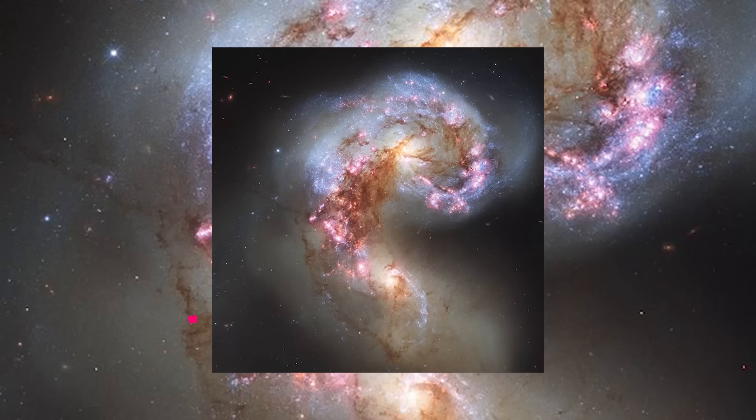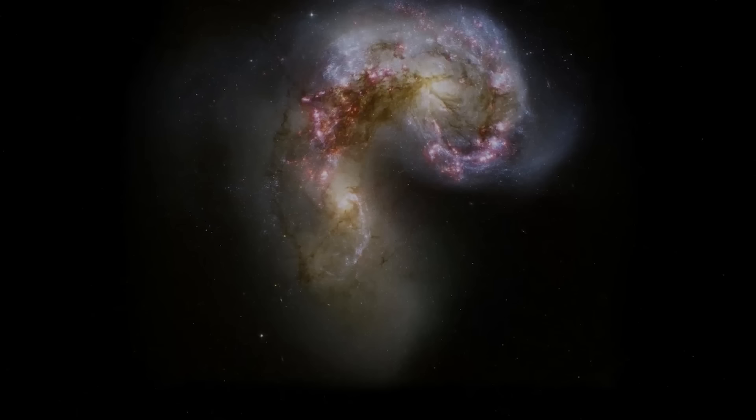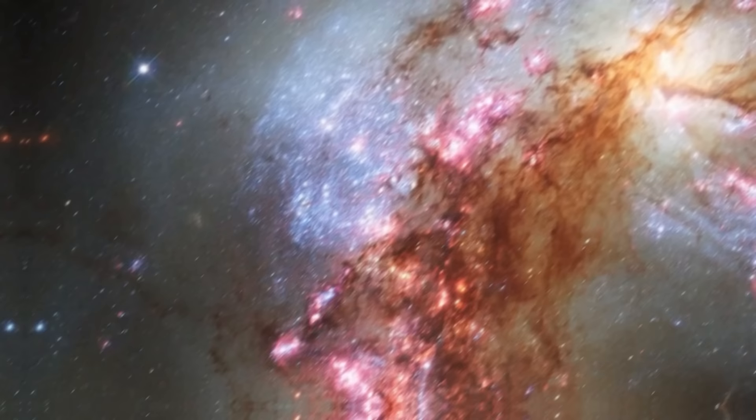Number 3. Antennae Galaxies. The new image of the Antennae Galaxies, also known as NGC-4038 and NGC-4039, shows obvious signs of chaos.